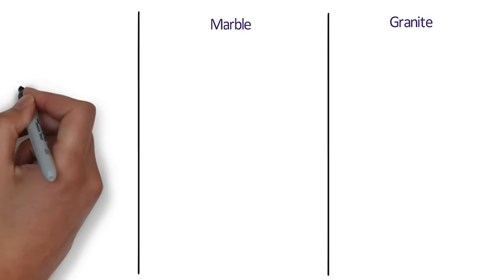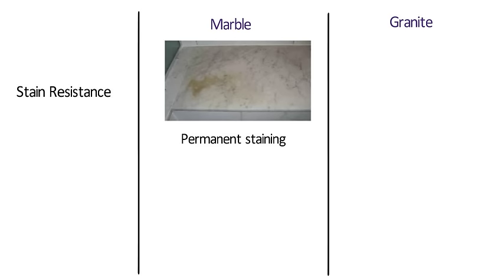In terms of stain resistance, marble can cause permanent staining, whereas the extreme density of granite makes it capable of resisting virtually all stains from foods and liquids.